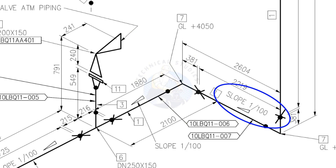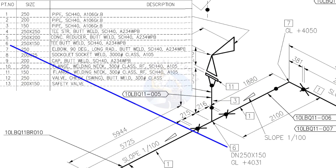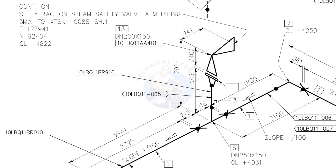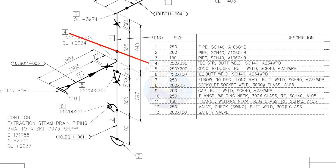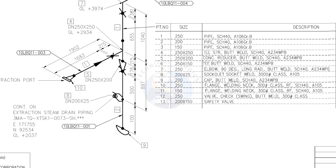Here the slope ratio changes from 1 to 200 to 1 to 100. Remember, it is very important to read the drawing carefully before and during fabrication. Item number 6 is a reducing T. Item number 13 is a safety relief valve — being familiar with valve symbols will be a big advantage. Item number 4 is a straight T, item number 5 is a concentric reducer, item number 8 is a socket weld branch, and item number 9 is a cap.